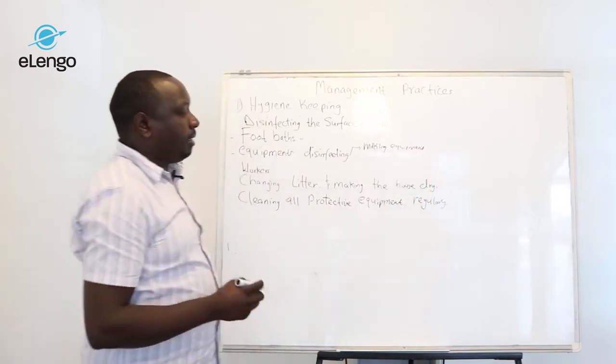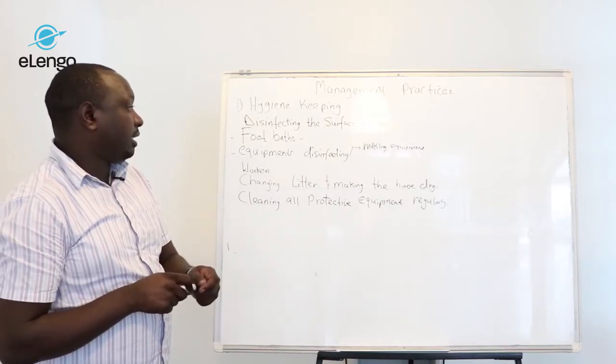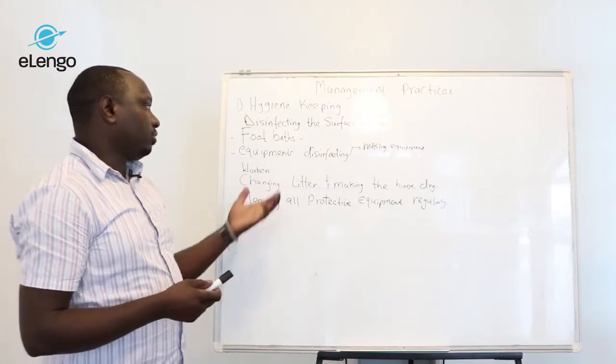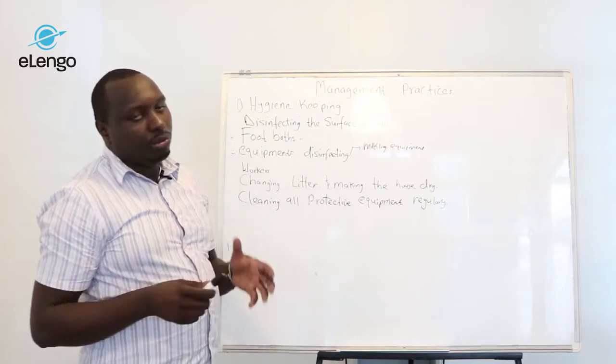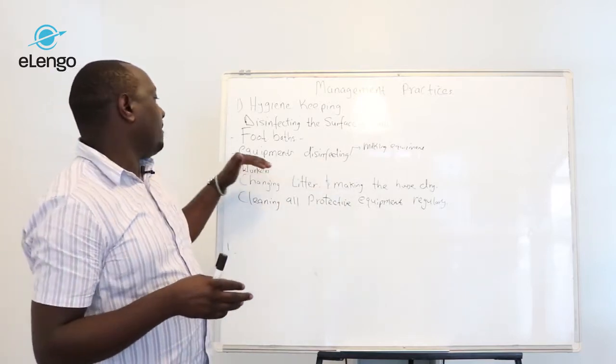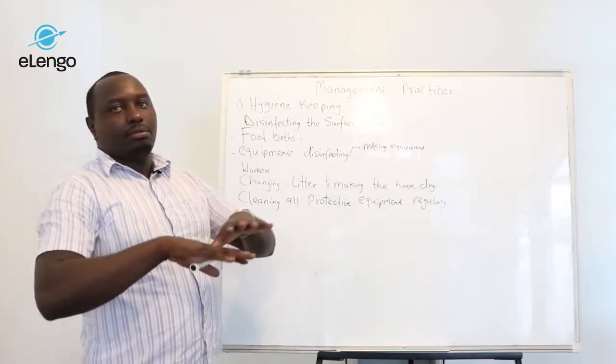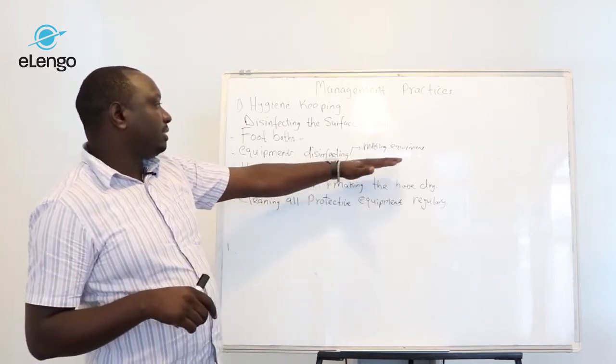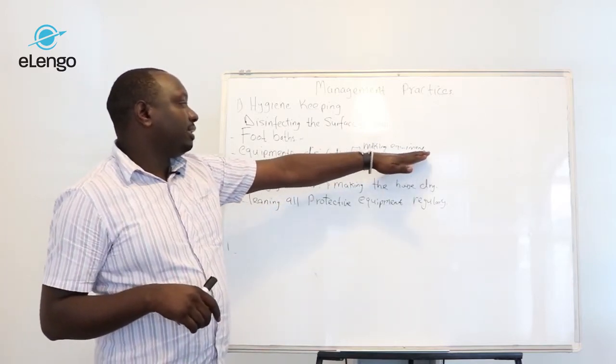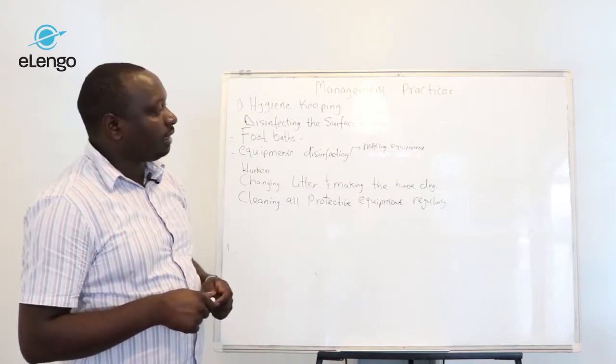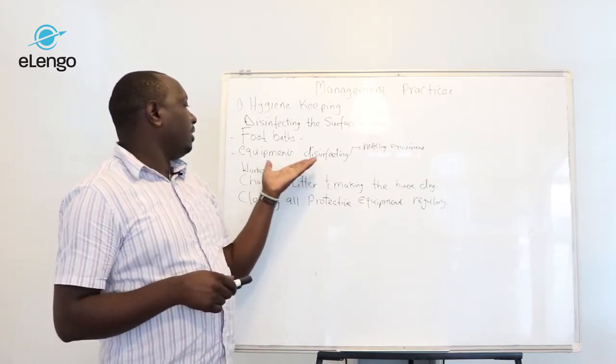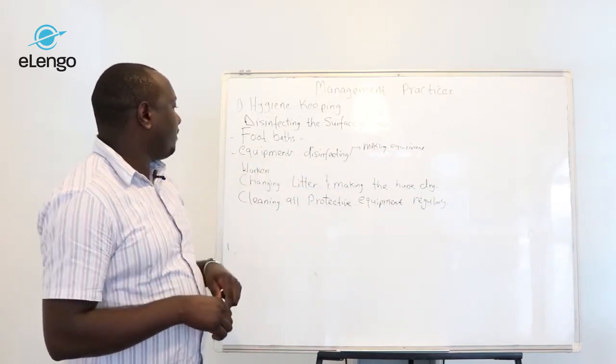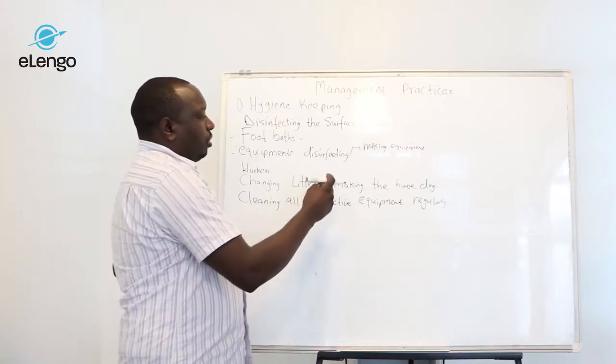Milking equipment may be disinfected using disinfectant, but the common way to disinfect the milking equipment is putting them under the sun so they can be sun dried, and that is another effective way of disinfecting the equipment.